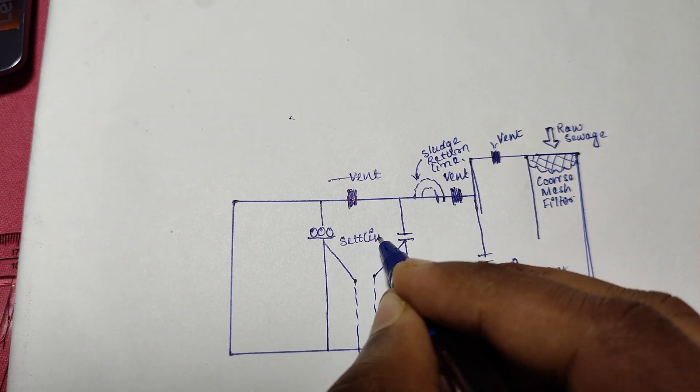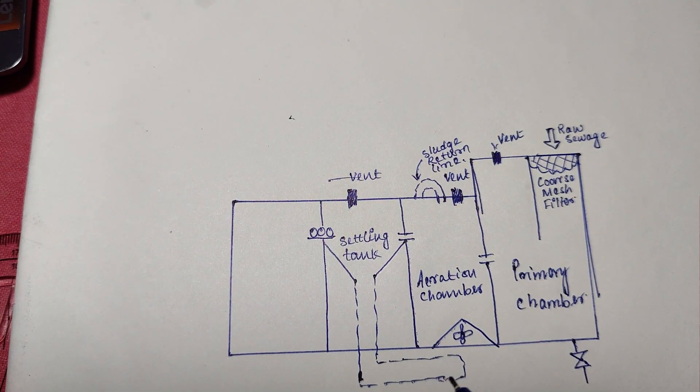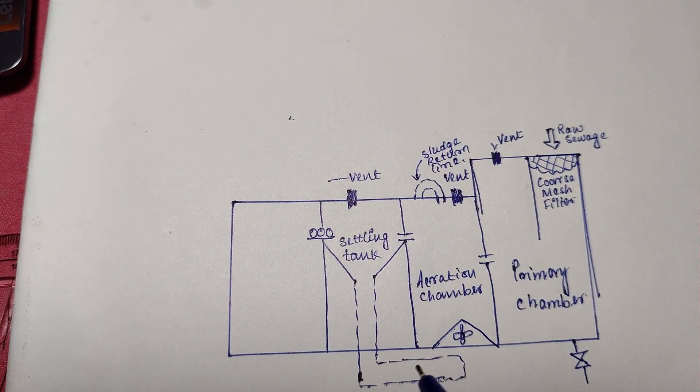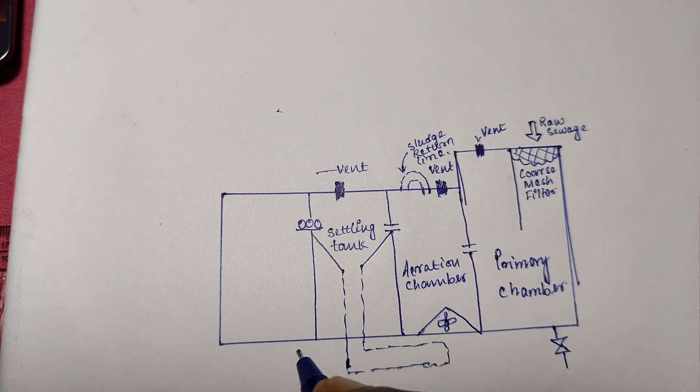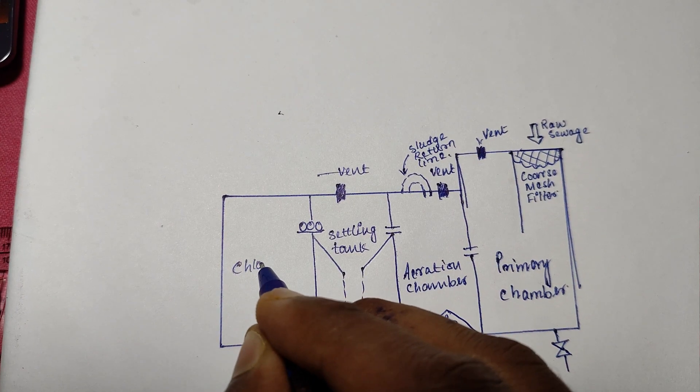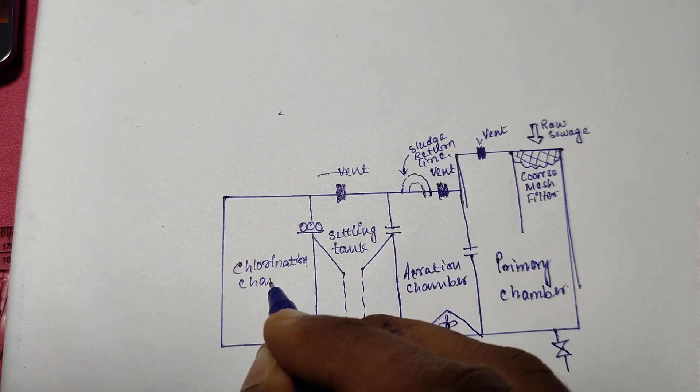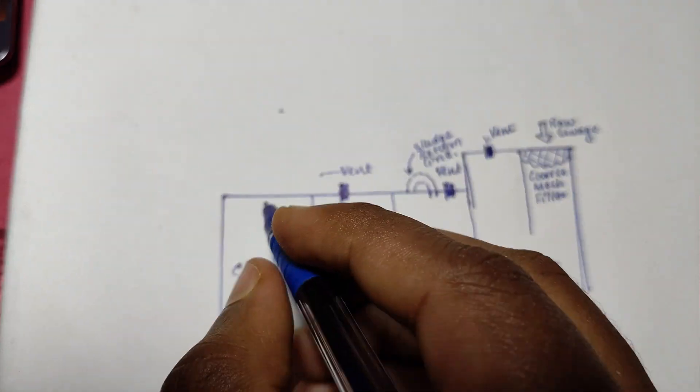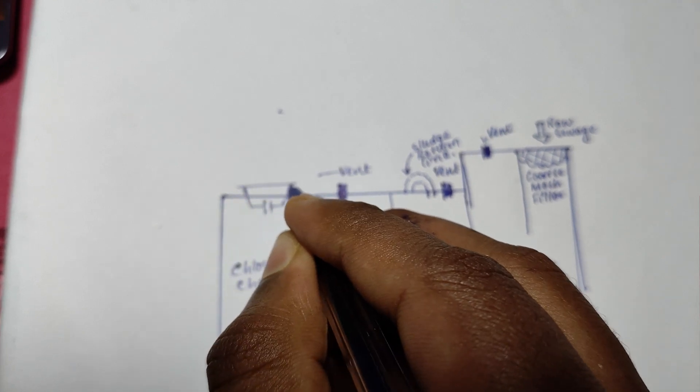Finally, the chlorination chamber. The clear liquid, all purified and fancy, overflows from the settling tank to the chlorination chamber, and the chlorinator disinfects the liquid. The chamber has float switches which